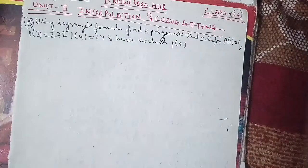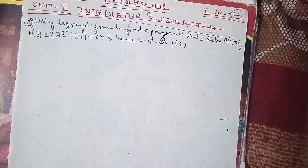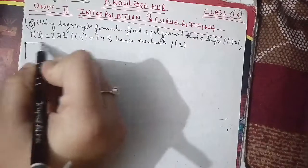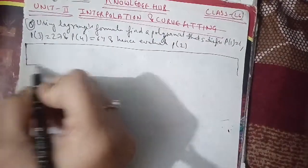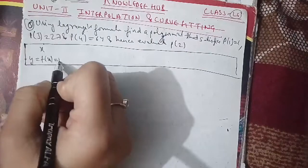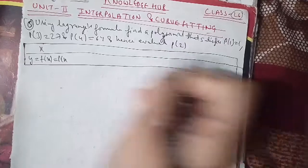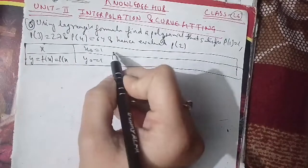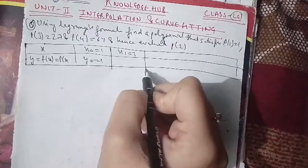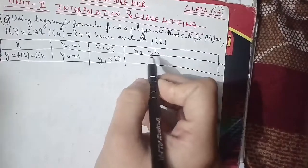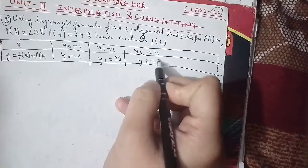Let us write the given data in tabular form. Here x and y = f(x) = p(x). So x0=1, y0=1; x1=3, y1=27; x2=4, y2=64. Here n=3 for the Lagrange interpolation formula.